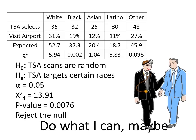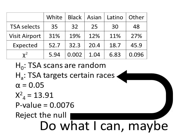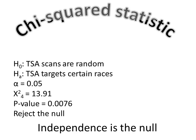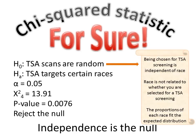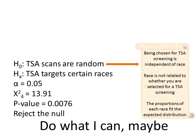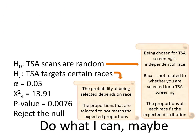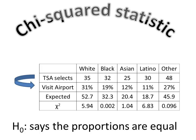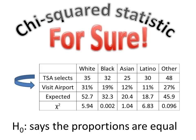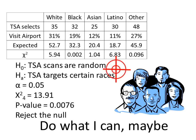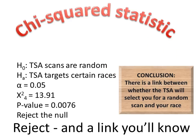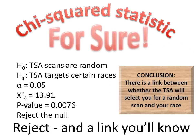Do what I can, maybe, kind of squared statistic — for sure. Independence is the null. Do what I can, maybe, kind of squared statistic, for sure. You reject, and a link — you will know.